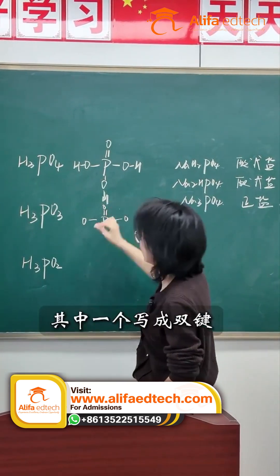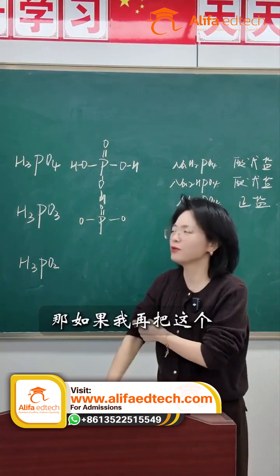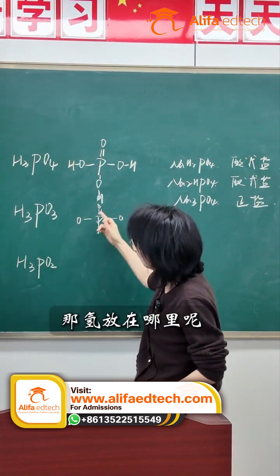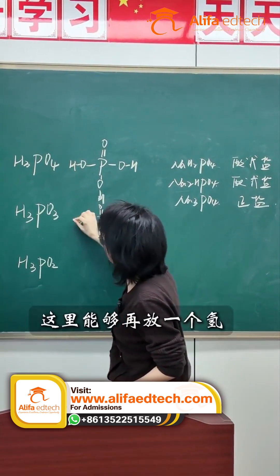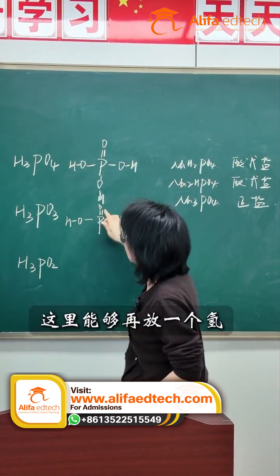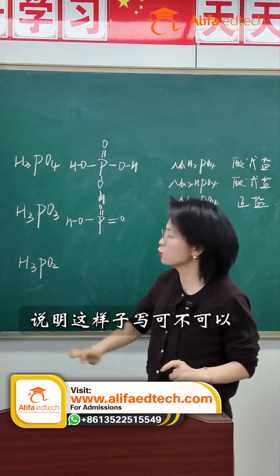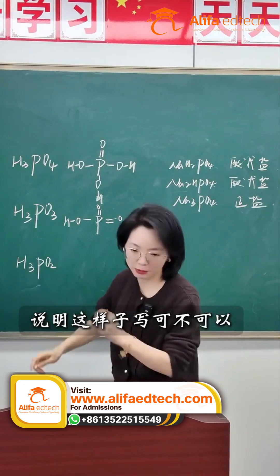What do we do? We write one of them as a double bond. Now if I write this one as a double bond too, then there are three hydrogens. So where do the hydrogens go? We can put one hydrogen here. But these two already have two bonds, so we can't add any more hydrogens. Does this mean this way of writing it is okay?